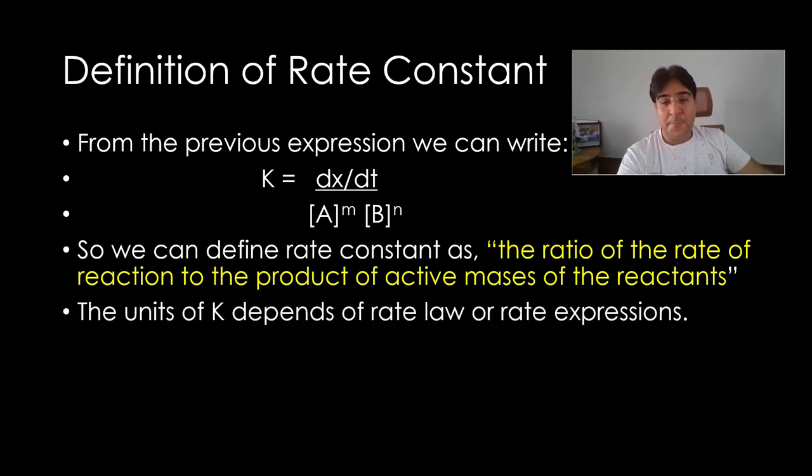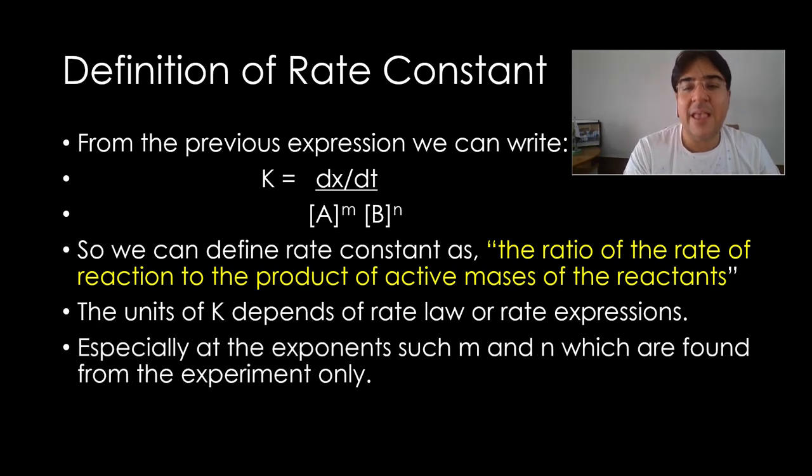Now, rate constant's unit will depend on the rate expression. Look at here. If the rate is in mole per dm cubed per second and the AB is also mole per dm cubed, then K has no unit, and so on. If there is mole per dm cubed for A, mole per dm cubed for B, if there is mole squared per dm cubed whole squared and the rate is mole per dm cubed, they cancel. So it means the unit of K comes from this expression. And this expression comes from experiment.